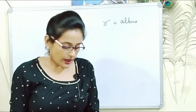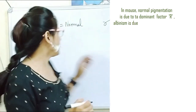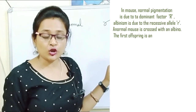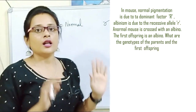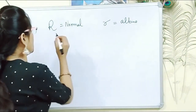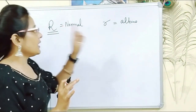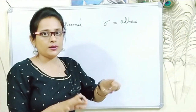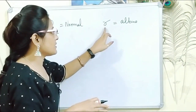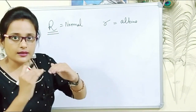Let's see one more question. In mice, normal pigmentation is due to the dominant factor capital R, and albinism is due to the recessive factor small r. If a mouse has normal skin color, at least one capital R will be present in its genotype. If a mouse is albino — meaning the normal color of the skin has been lost — that is due to the recessive small r allele.